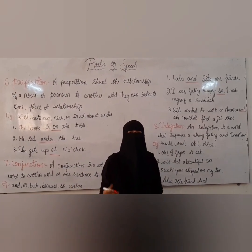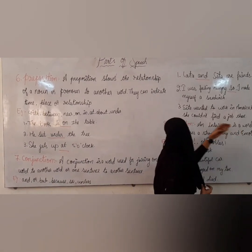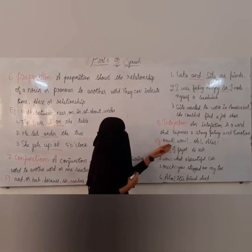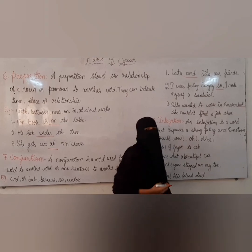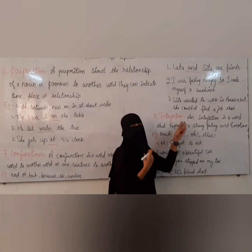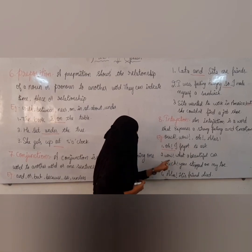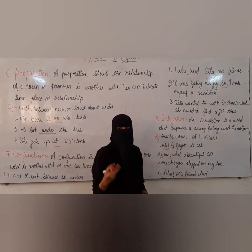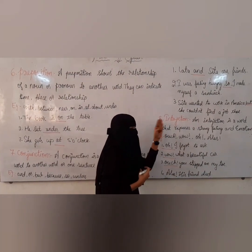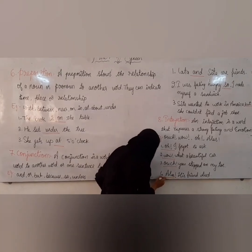Now let's move on to part of speech number eight, the last one — interjection. What is an interjection? An interjection is a word that expresses a strong feeling and emotion. Examples: ouch, wow, oh, alas. Oh, I forgot to ask — oh is an interjection. Wow, what a beautiful car — wow is an interjection. Ouch, you stepped on my toe — ouch is an interjection. Alas, his friend died — alas is an interjection.